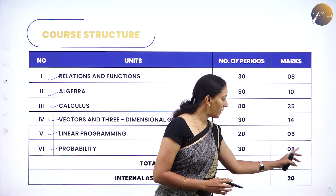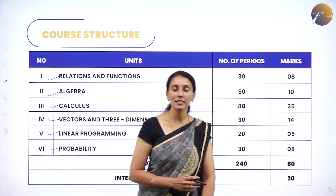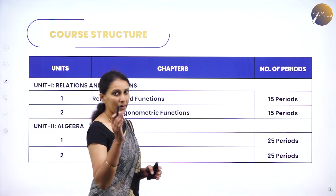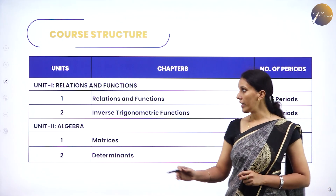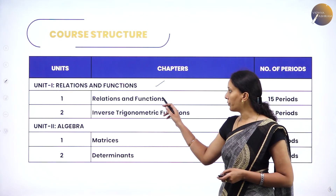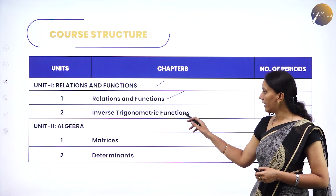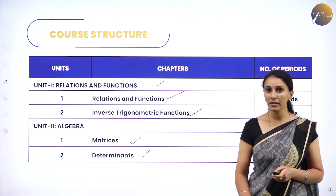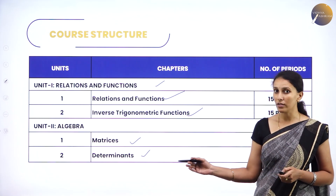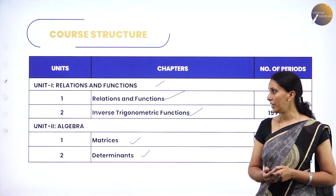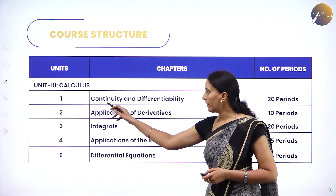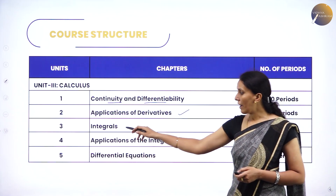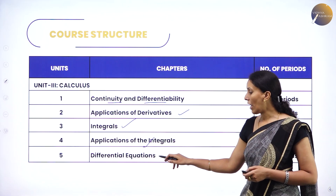The written exam is for 80 marks and the remaining 20 marks will be your internal assessment. Looking at the chapters under each unit: Relations and Functions has two chapters — Relations and Functions, and Inverse Trigonometric Functions. Under Algebra you have Matrices and Determinants — easy to learn and score. Under Calculus you have Continuity and Differentiability, its Applications, Integration and its Applications, and Differential Equations.